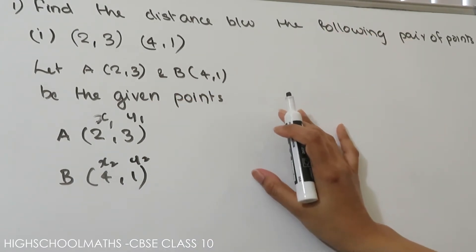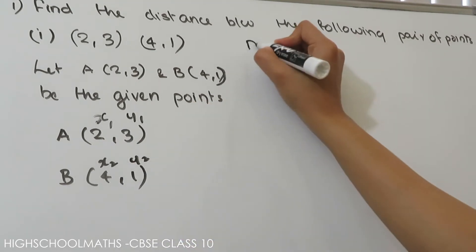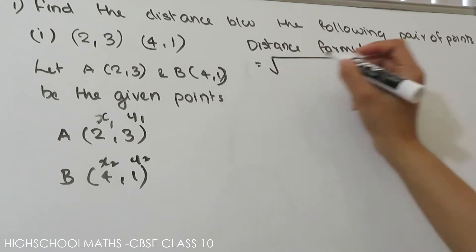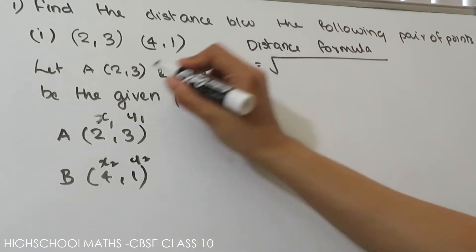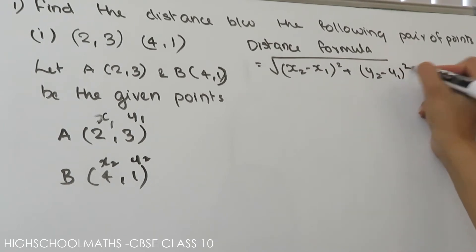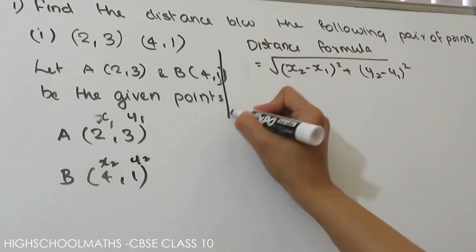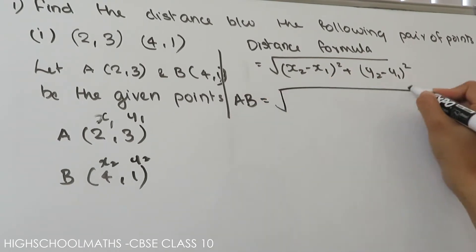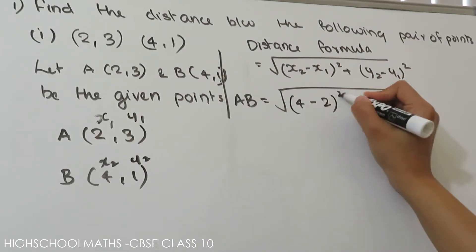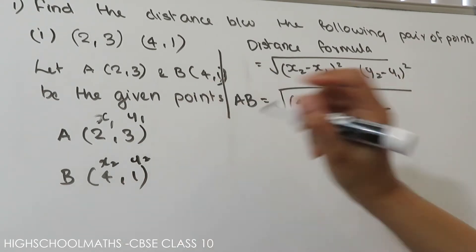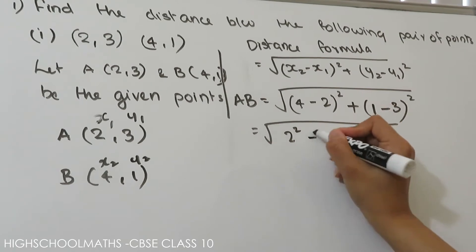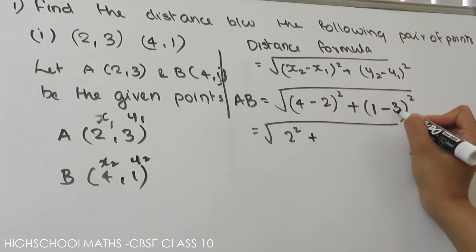Substituting the values: the distance formula is square root of (x2 minus x1) whole square plus (y2 minus y1) whole square. We have AB as our distance. x2 equals 4 minus x1 equals 2, the whole square, plus y2 equals 1 minus y1 equals 3, the whole square, equal to square root of (4 minus 2) whole square plus (1 minus 3) whole square.